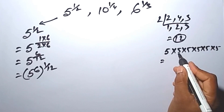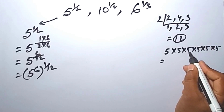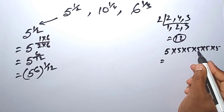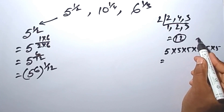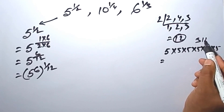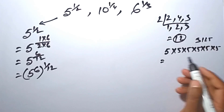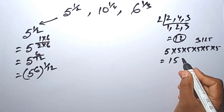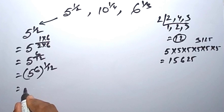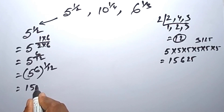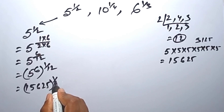So 5 to the power of 6 means 5 into 5 into 5 into 5 into 5 into 5. So 5 into 5 is 25, 25 into 5 is 125, 125 into 5 is 625, 625 into 5 is 3125, 3125 into 5 is 15,625. So this value is 15,625 to the power of 1 by 12.